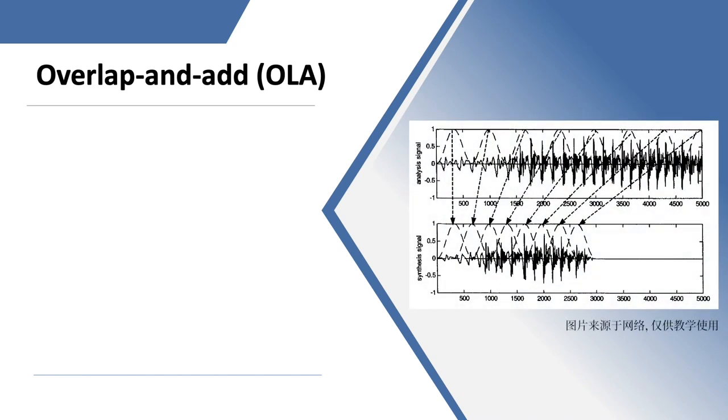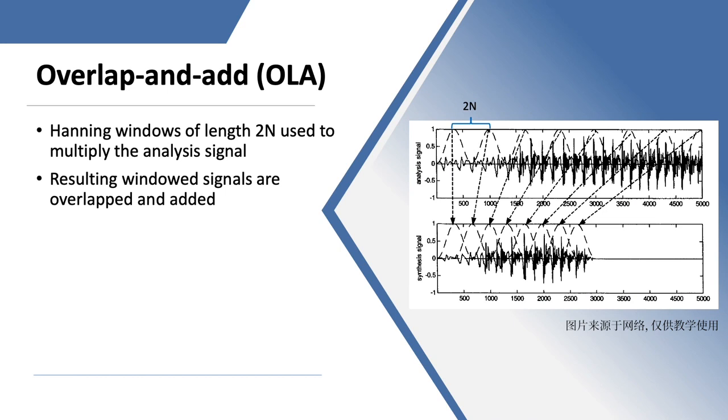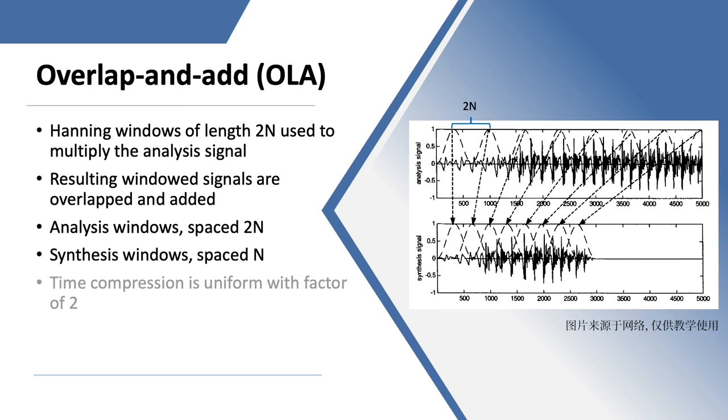The overlap and add, or OLA, is the core technique used in PSOLA algorithm. As is shown in the figure, a series of Hanning windows of length 2N is used to multiply the analysis signal. The resulting windowed signals are overlapped and added. The figure shows analysis windows are spaced with 2N and synthesis windows are spaced with N.